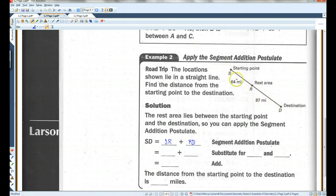Now in the diagram, it says that SR is 64 miles, and RD is 87 miles. So I'm going to substitute those numbers for SR and RD.